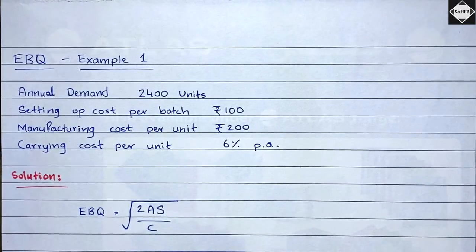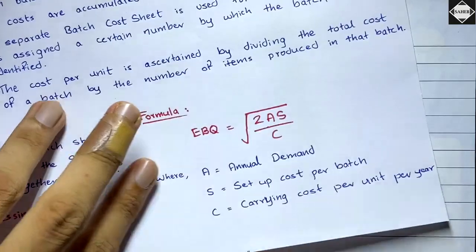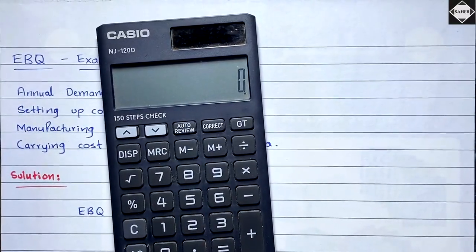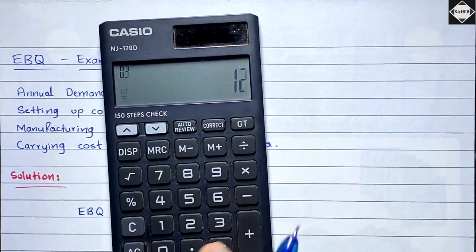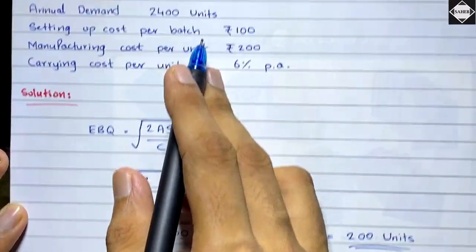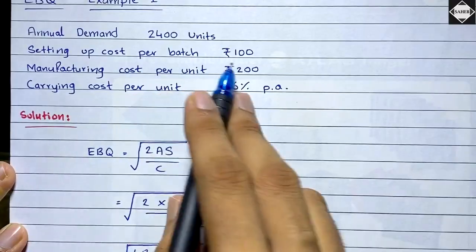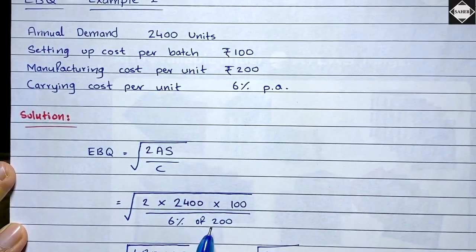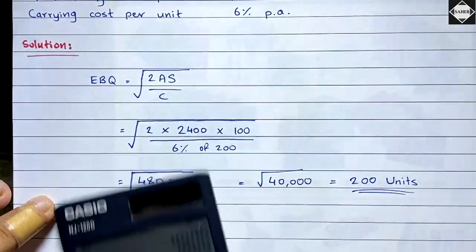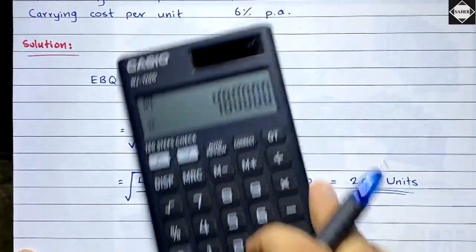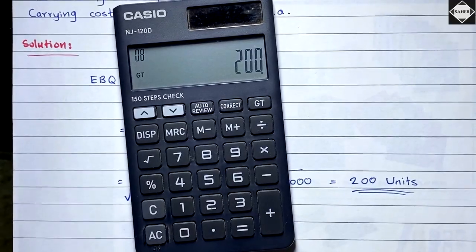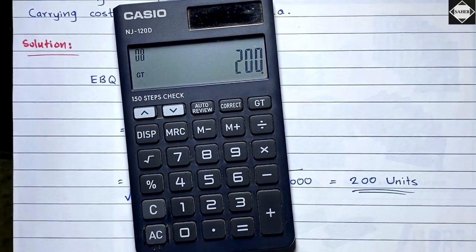Now we apply the formula: EBQ = √(2 × 2400 × 100 / 12). Calculating: 2 × 2400 × 100 = 480,000; 480,000 ÷ 12 = 40,000; √40,000 = 200. So the Economic Batch Quantity is 200 units.